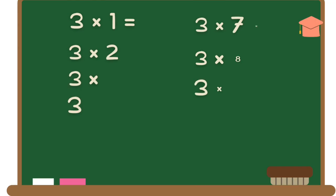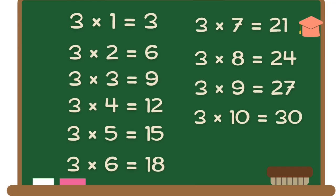Let's revise it. Three ones are three. Three twos are six. Three threes are nine. Three fours are twelve. Three fives are fifteen. Three sixes are eighteen. Three sevens are twenty-one. Three eights are twenty-four. Three nines are twenty-seven. Three tens are thirty.